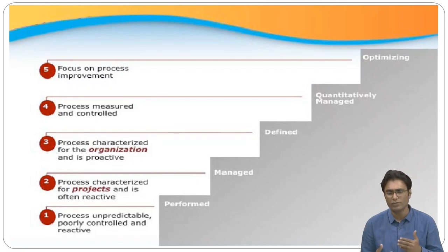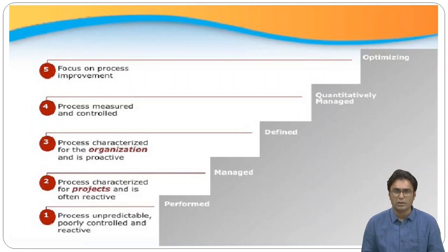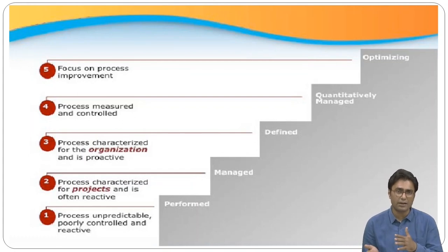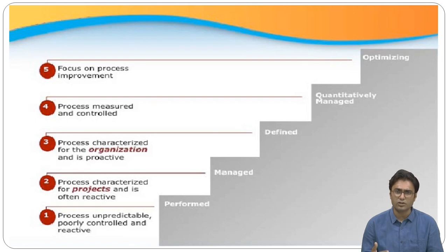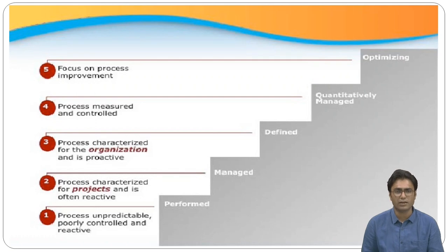Maturity level two is Managed. At this level, an organization has achieved all the specific and generic goals of the maturity level two process areas. Projects are performed and managed according to their documented plans. The organization ensures that project requirements are managed and that processes and work products are planned, performed, measured, and controlled. Work products are reviewed with stakeholders.